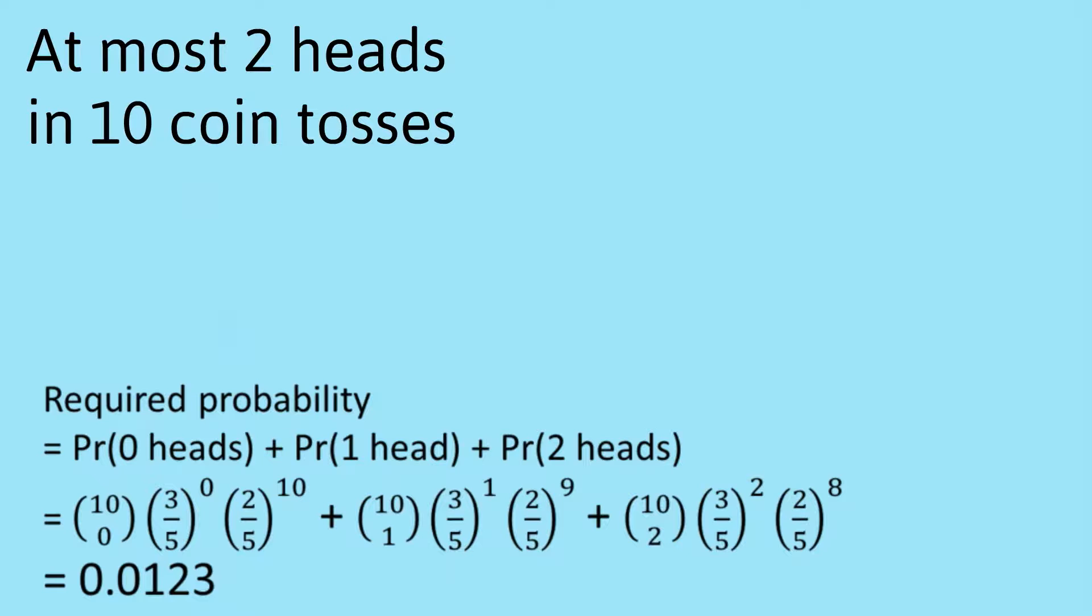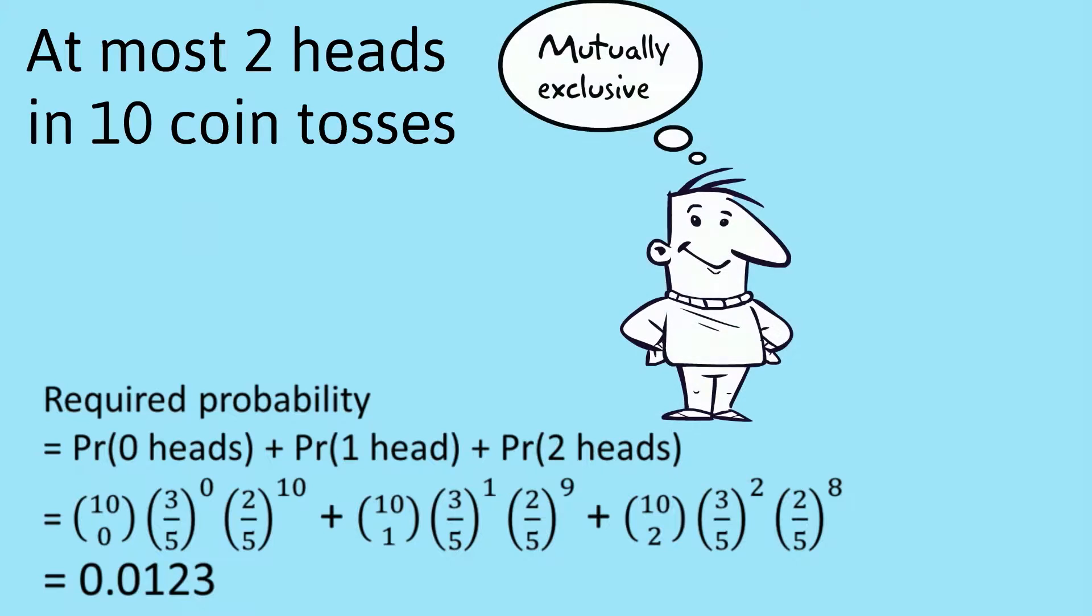So I suppose the question is here, why do we add rather than multiply? So here we're talking about mutually exclusive events. So if you get zero heads, well, then you can't get one head and you can't get two heads. So these are mutually exclusive events. And we tend to use the word OR. So we say, what's the probability of getting zero heads or one head or two heads? So those two things tell us that we should add the probabilities.